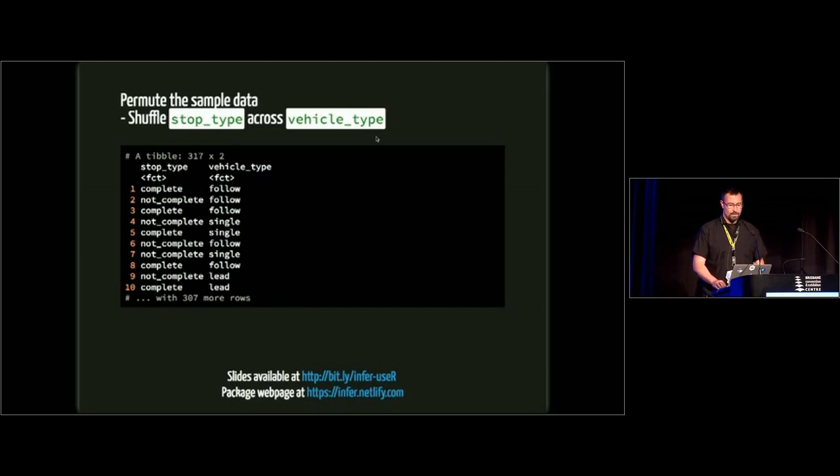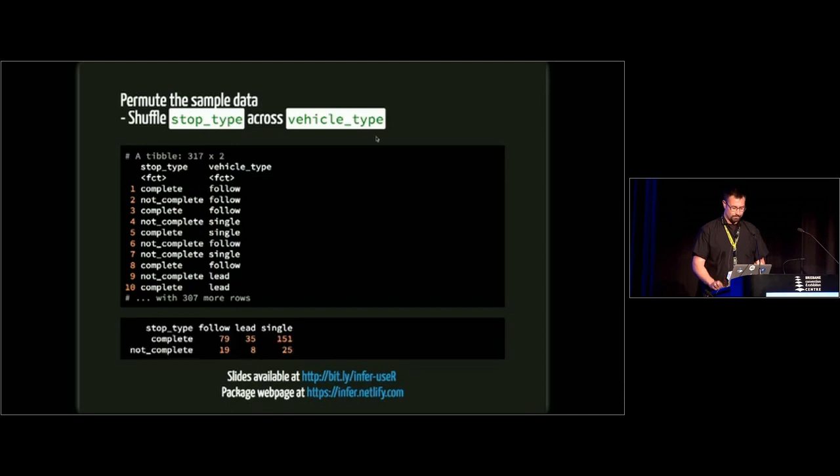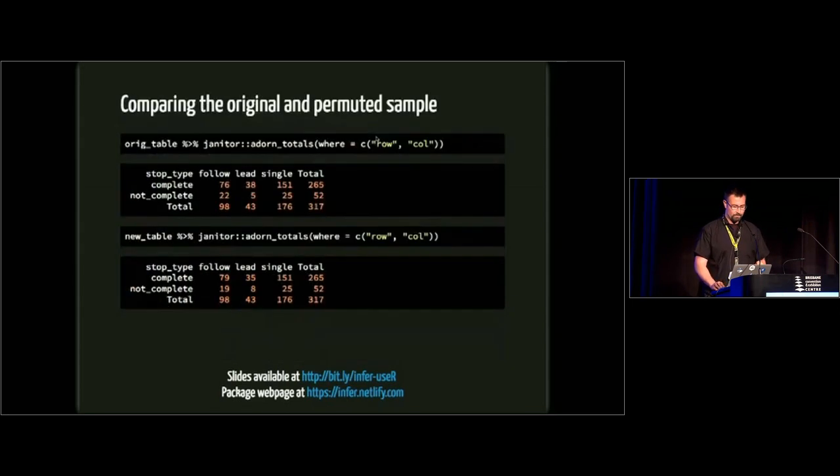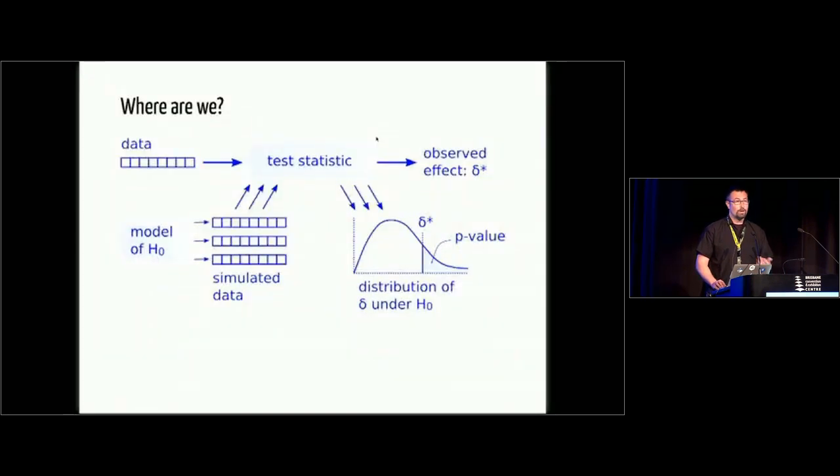I'm going to go back and think about what the actual properties are of the original sample that we collected in terms of counts in each one of the columns. For complete follow we have 76, and so on in each of those different six groups. That's the original sample. There's also a fantastic package by Sam Firke, the janitor package, that gives you a nice little table so you can really easily see things like that. If you want to think about how we actually do this assuming the null hypothesis is true, we're going to shuffle one variable across all the other values of the other variable. That's exactly what we've done here. Stop type is shuffled across vehicle type.